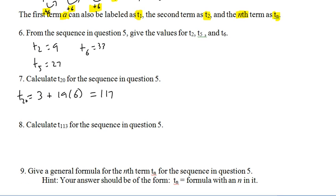So, that means that T20 is going to equal 117. And, we can do the same thing with T113. It's going to be that first one, plus 112 6's. We'll give it a 675.